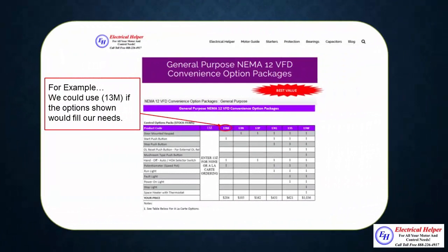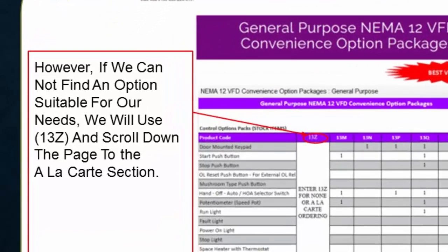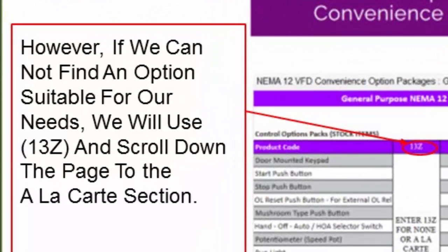At this point you should have jotted down the model number of the unit you are interested in along with the product codes on the options that you might want. If there isn't any options that fill your needs, don't worry because all you need to do is jot down 13Z, that's 13Z as in zebra, which means you will be making your option selections from the a la carte section.